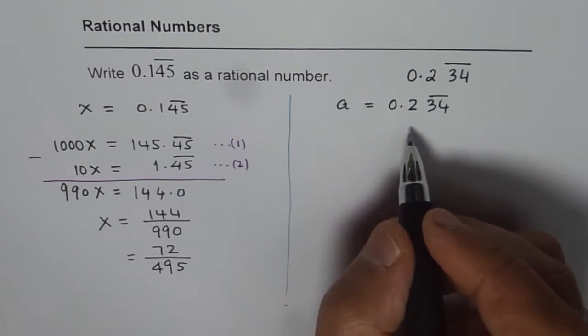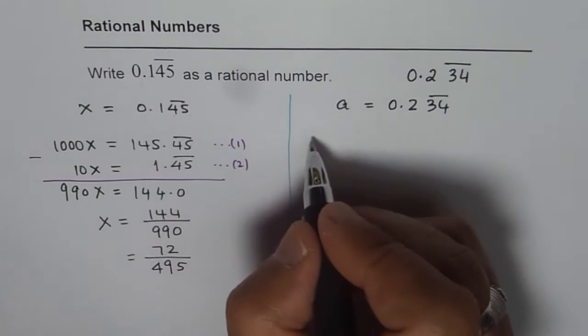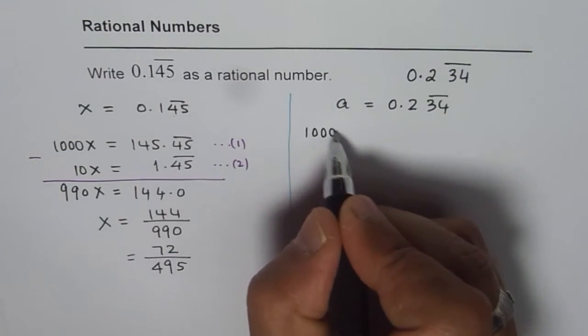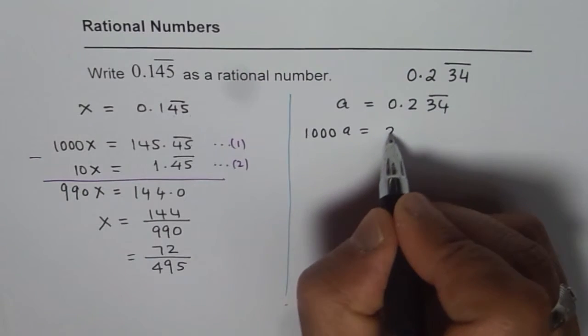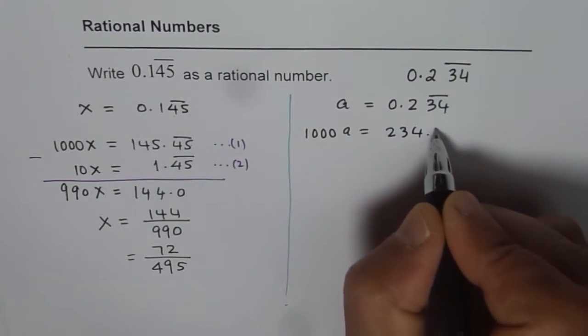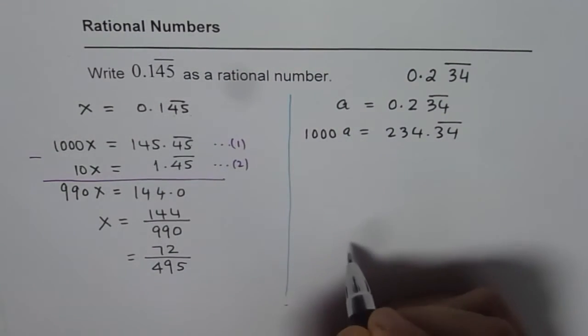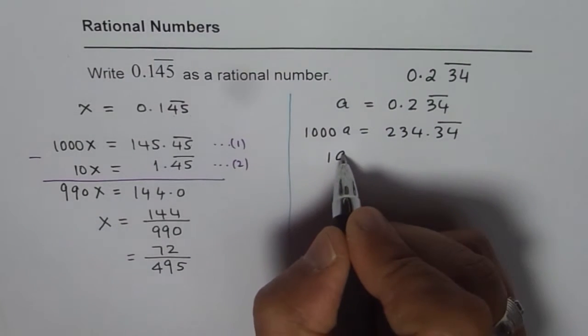Then, in that case, what would be 1000 times A? 1000 times A will be 234.34 recurring. And what is going to be 10 times A? 10 times A will be 2.34 recurring.